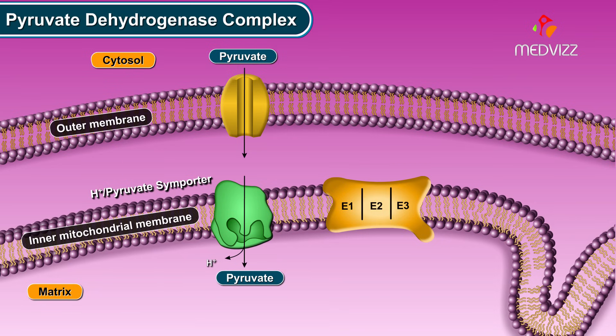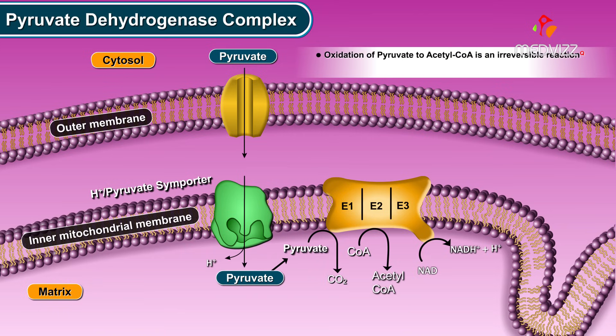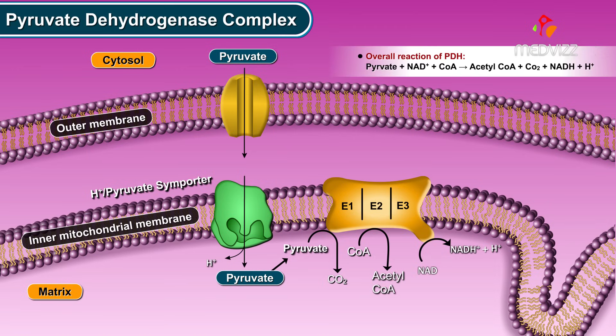In the mitochondrial matrix, pyruvate is oxidatively decarboxylated to form acetyl coenzyme A. This oxidation of pyruvate to acetyl coenzyme A is an irreversible reaction, and it serves as the link reaction between glycolysis and the citric acid cycle. The overall reaction is catalyzed by the PDH complex.